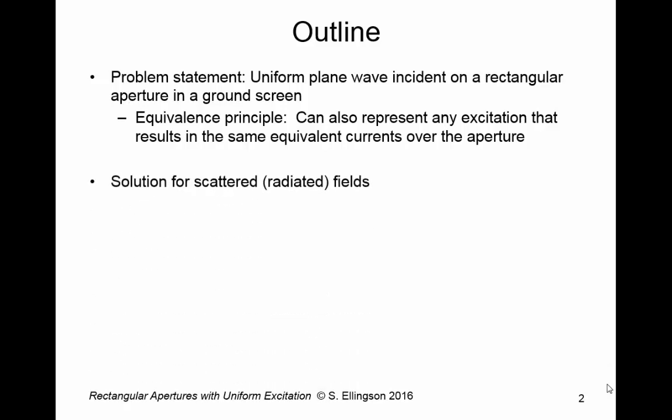So what we'll do first is we'll come up with a solution for the scattered fields. When I say scattered, if you think of this as an antenna in one of these equivalence problems, then it's also the radiated fields from that antenna. The distinction is not very important. We'll treat it like a scattering problem, but we can imagine it is also a radiation problem. Then we'll characterize the pattern — we'll look at the E and H plane patterns, talk about half power beam width, side lobe level, and so on.